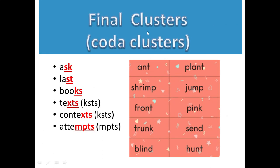Look at the first example: 'ask'. The sounds of S and K are both distinct — /s/ and /k/ both come through clearly. More examples: ask, last, books, text, context, attempts. Note that the sound of X is /ks/, so in 'text' and 'context' you are hearing two consonant sounds from the letter X.